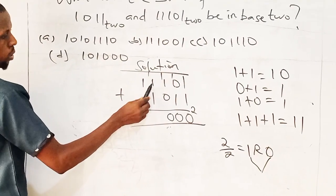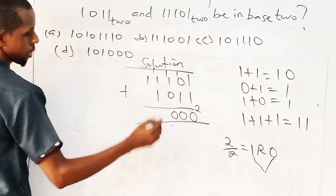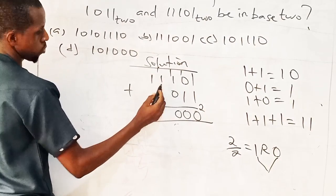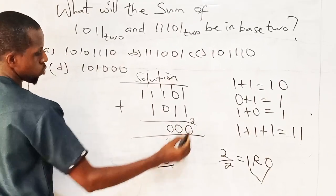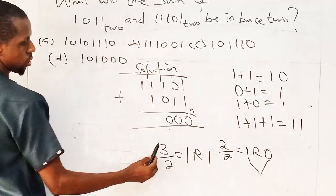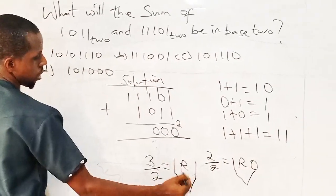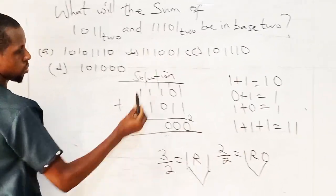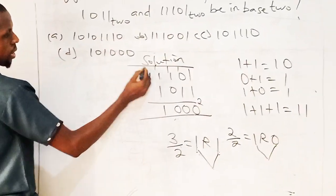1 plus 1 plus 1 is 11. So how did I prove that? When I say 1 plus 1 plus 1, normally it is 3. So when you divide 3 by 2, you have 1, remainder 1. So I take this together as 11. So I say 1 plus 1 plus 1 is 11. So I write my 1, I keep my 1.